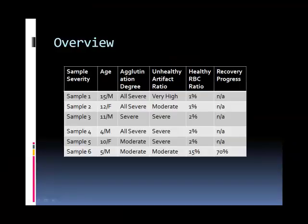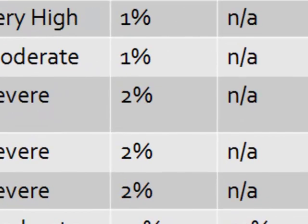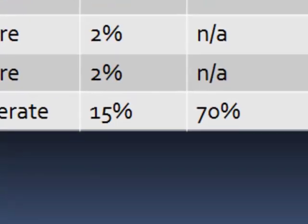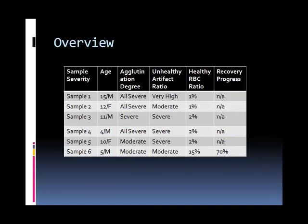In each case, the ratio of healthy red blood cells was between 1 and 2%, with the exception of sample number 6, which is a child who is substantially recovered — approximately 70% — and had an approximate healthy red blood cell ratio of about 15%. The slides that follow provide visual evidence that red blood cell health is a significant factor in autism and, more importantly, a significant inhibiting factor to the child's ability to heal.